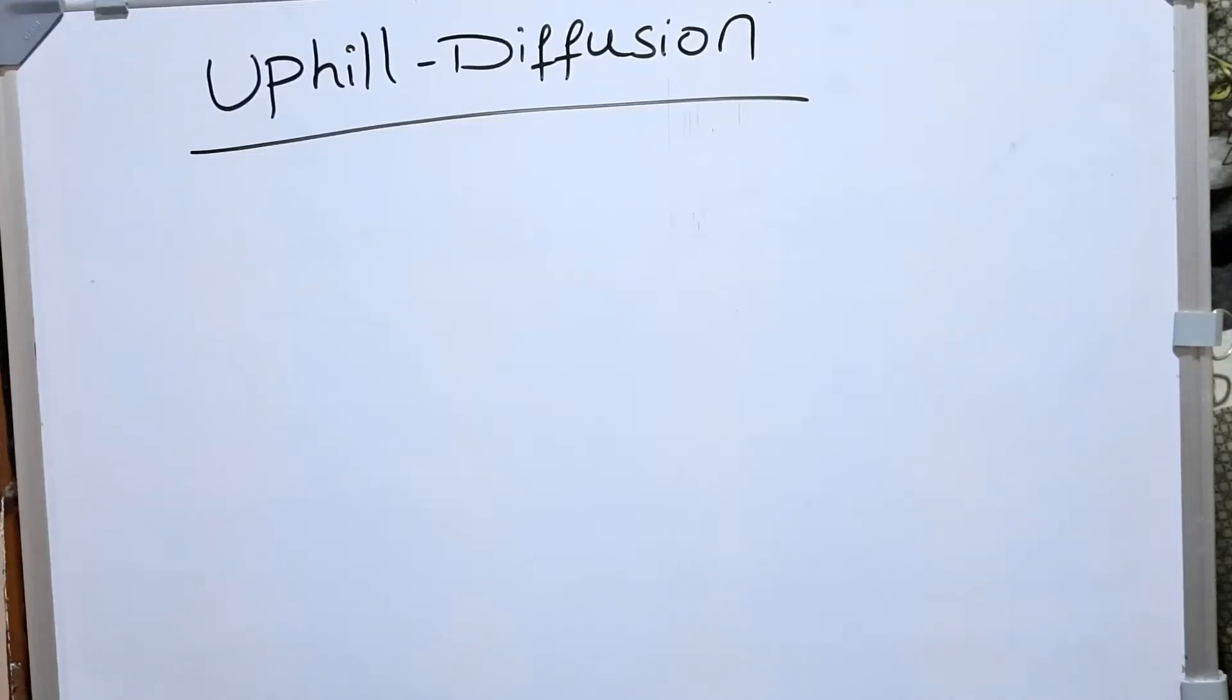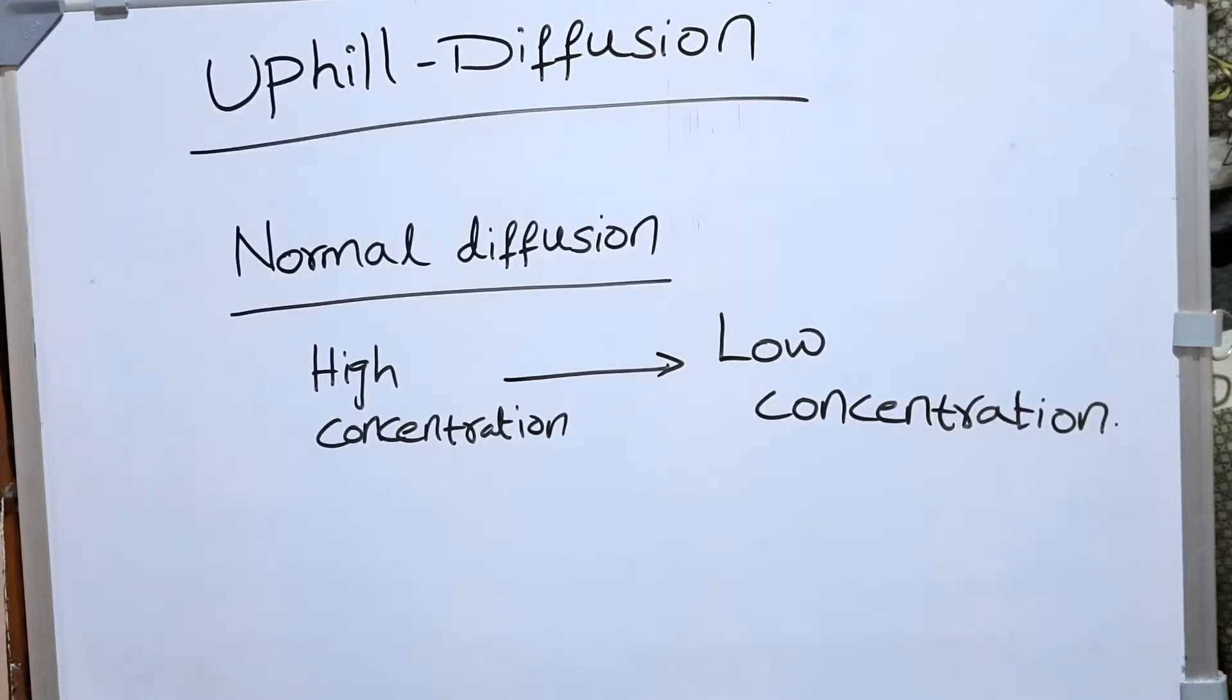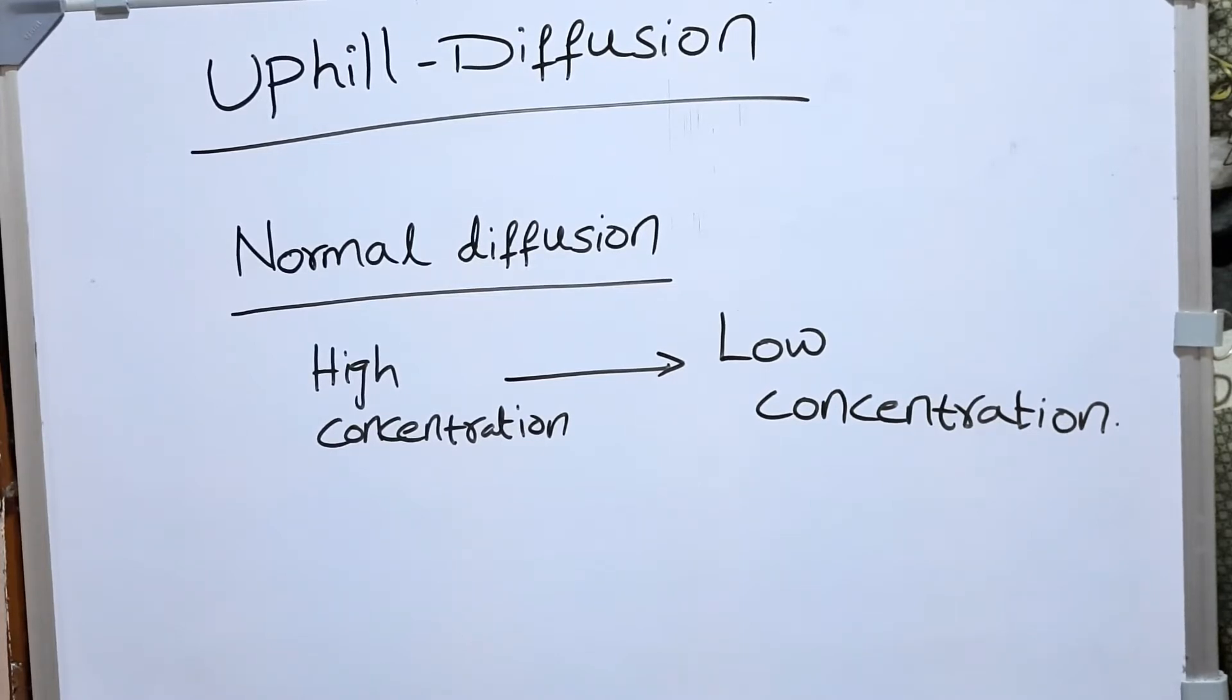Hello friends, let's discuss an interesting metallurgical phenomenon called uphill diffusion. We know during normal diffusion, it happens from high concentration to low concentration, which means down the concentration gradient. If diffusion occurs this way, it is normal diffusion.